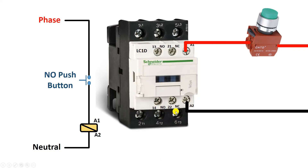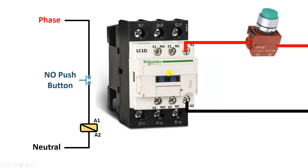Besides the power terminals, the NO and NC contacts of the contactor also change. Above the contactor, NO is written here, meaning when the contactor is off, power supply at terminal 13 won't reach terminal 14. Power supply connected at terminal 13 will come to terminal 14 only when the contactor is turned on. Terminals 21 and 22 are of NC contact. Power supply of the NC contact will always flow forward — even when the contactor is off, power supply at this point will still flow through. But when the contactor turns on, this NC contact will open, the circuit will break, and power supply connected at this point will not reach the other point.